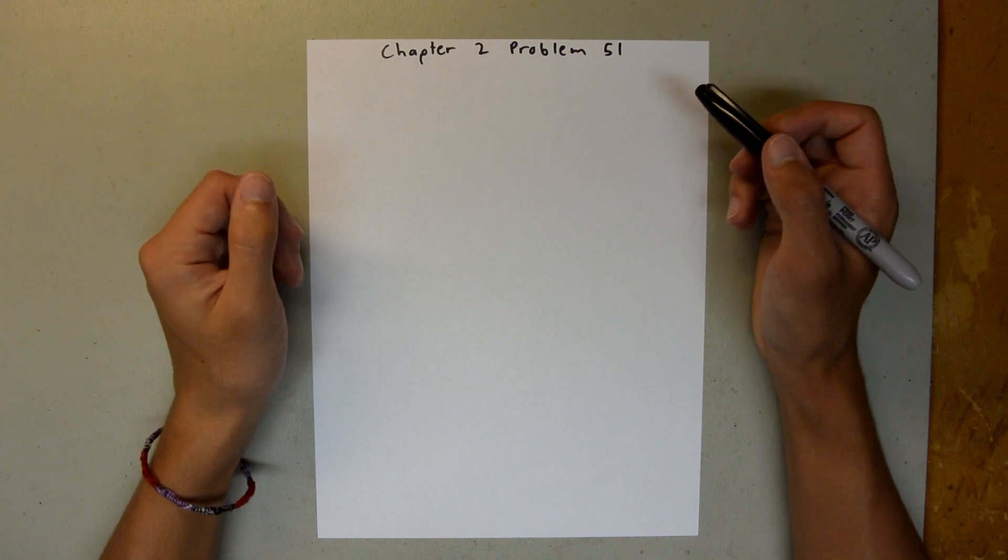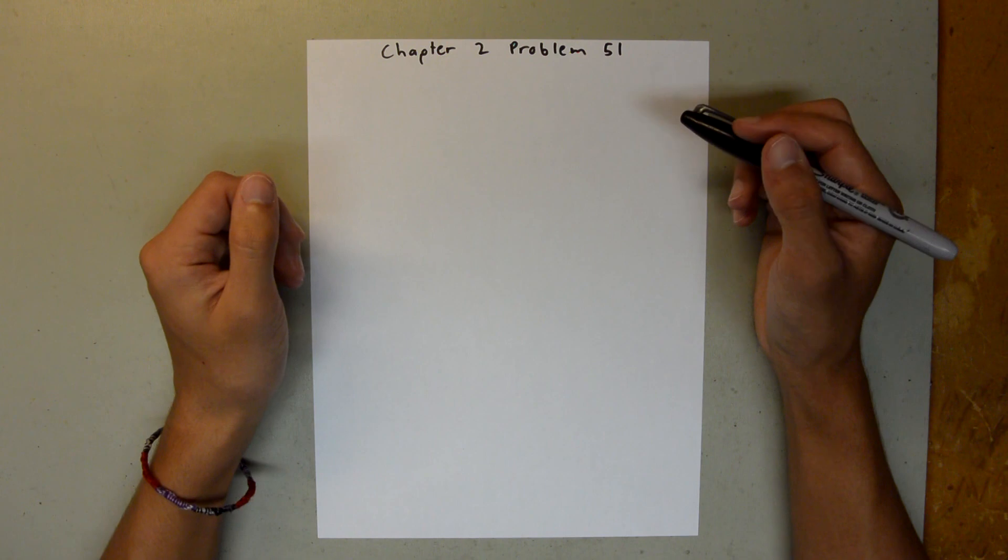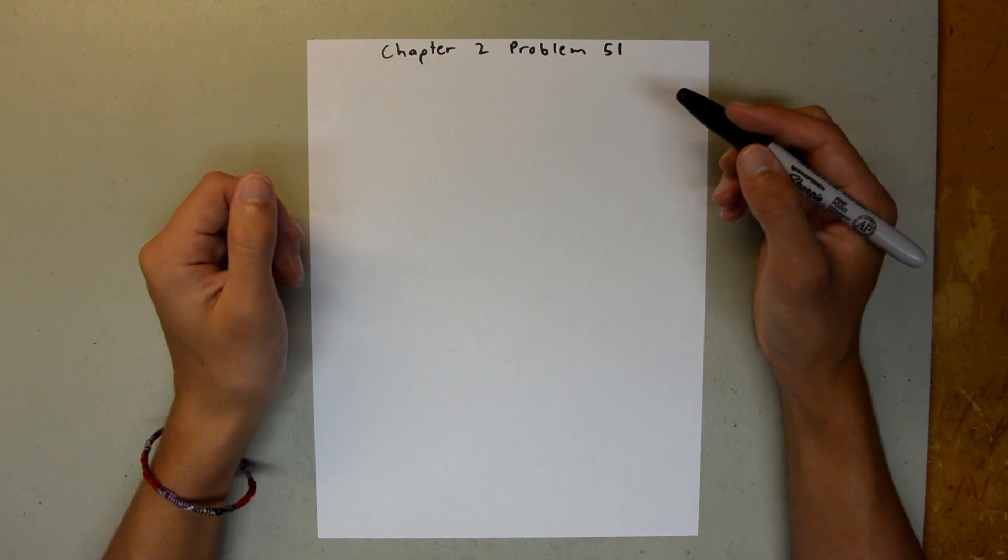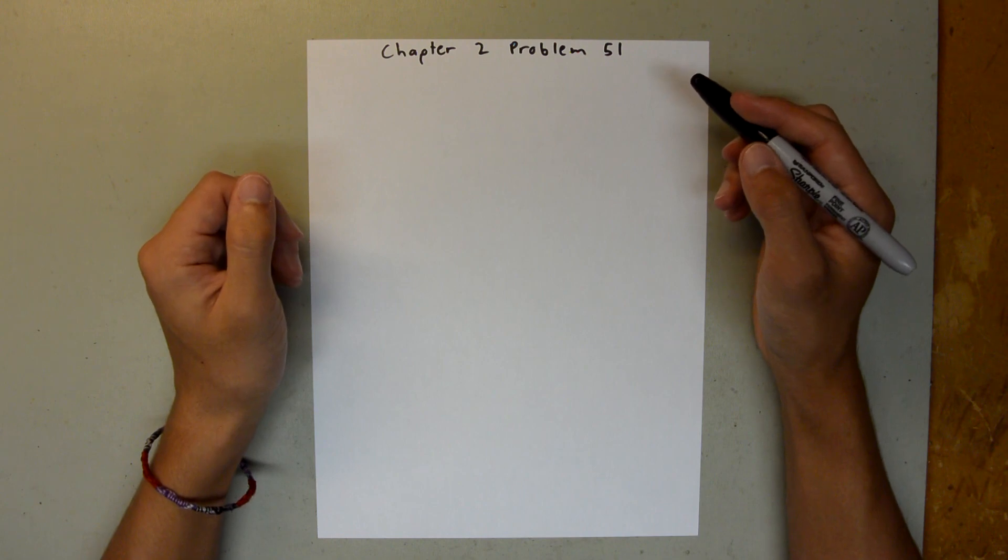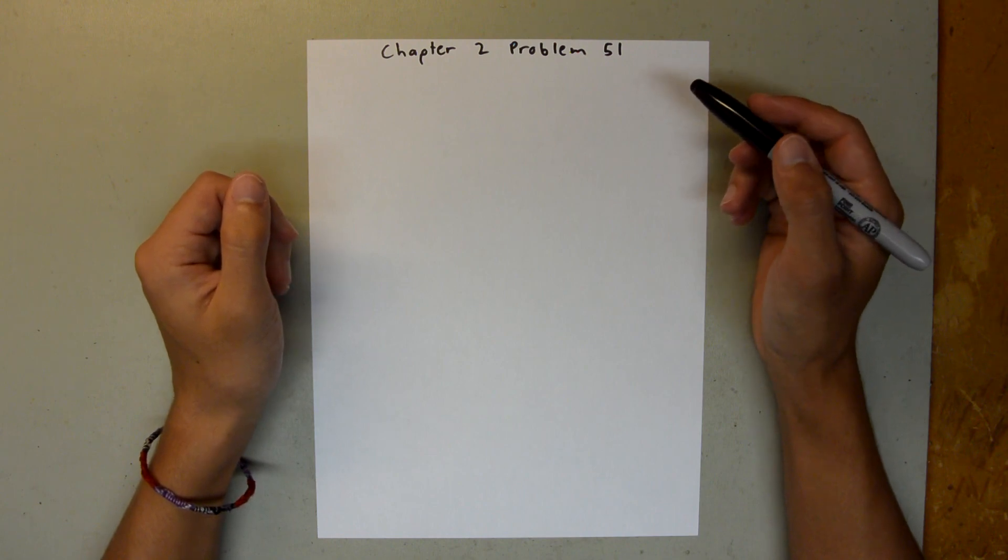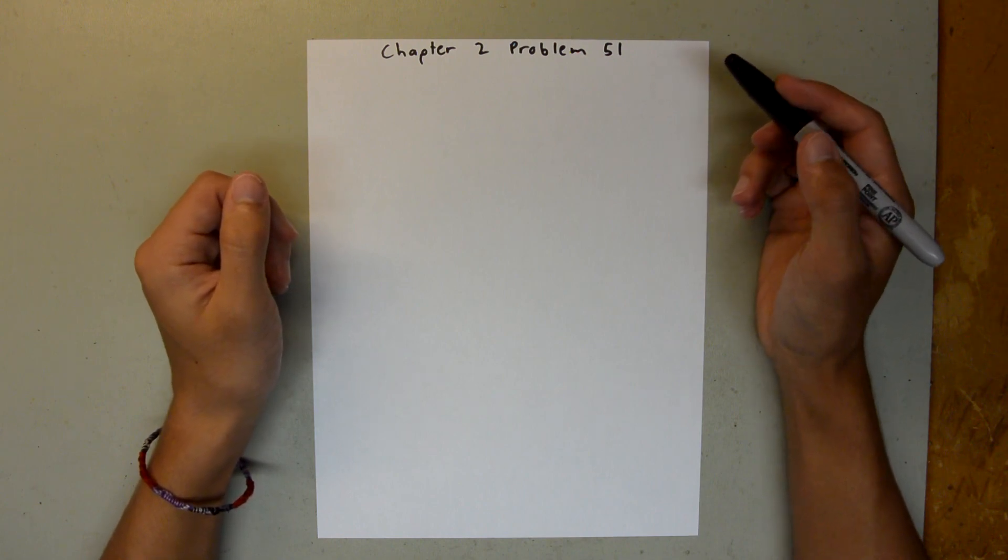Chapter 2 is all about motion along a straight line, and in Problem 51, a key is being dropped off a bridge and onto a boat that is moving at a constant velocity, and we are asked to find what the speed of that boat is, given a couple parameters.